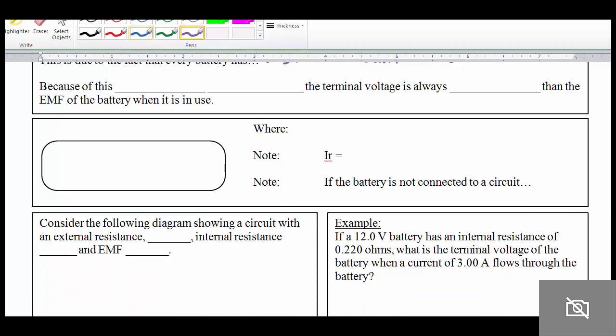So we call this internal resistance, and the terminal voltage is always less than the EMF once the battery is in use.